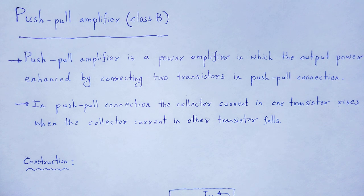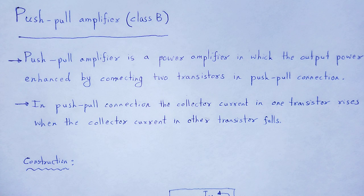In the classification of amplifiers, we classify amplifiers on the basis of their mode of operation as class A, class B, and class C amplifiers. Here, class B amplifiers are called push-pull amplifiers.